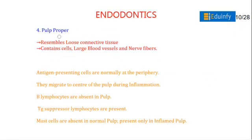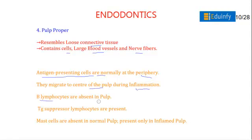The pulp proper resembles loose connective tissue and contains cells, large blood vessels, and nerve fibers. Antigen-presenting cells are normally present at the periphery and migrate to the center of the pulp during inflammation. B lymphocytes are absent in the pulp, while T suppressor lymphocytes are present. Mast cells are absent in normal pulp but present in inflamed pulp.